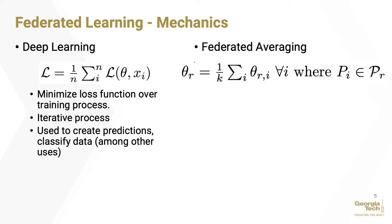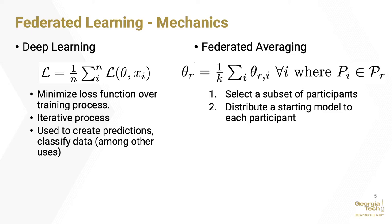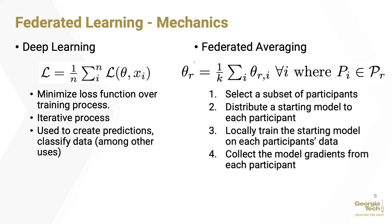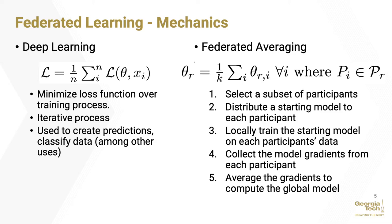Using federated averaging, our training process follows these steps. First, we select k participants, which are represented as all i. Next, we distribute a starting model to each selected participant. We then use deep learning to train the provided starting model on each participant's data locally. Upon completion of training, we collect the model gradients from each participant, and finally average the gradients to compute the global model for that round. Together, these five steps represent a single communication round. The training process in federated learning is composed of many of these communication rounds, which occur sequentially.